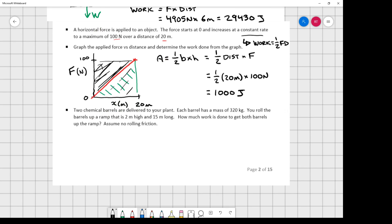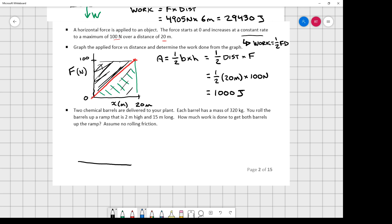One more variation on the question that you may see. You've got two chemical barrels delivered to your plant. Each barrel has a mass of 320 kilograms. You roll the barrels up a ramp, and we've got some ramp dimensions here. So my ramp is two meters and 15 meters here. How much work is done to get both barrels up the ramp, and we're going to assume no rolling friction, which is really nice for us.